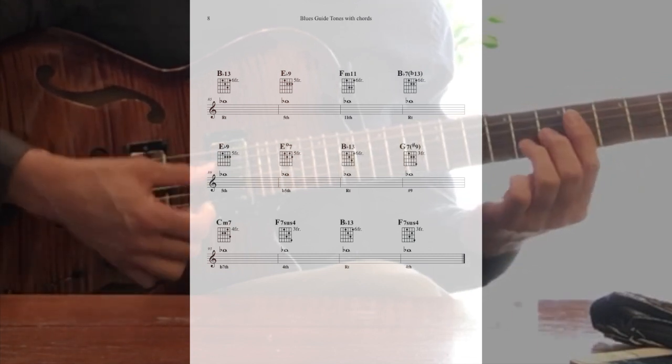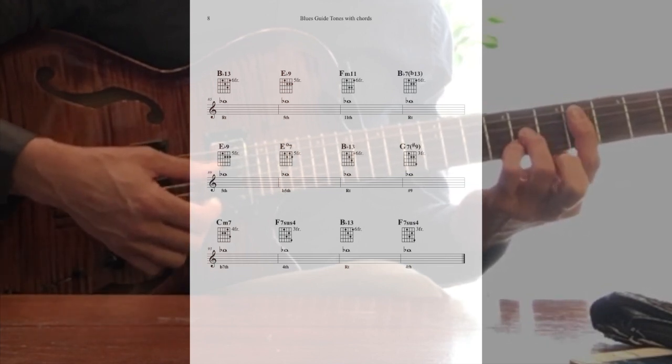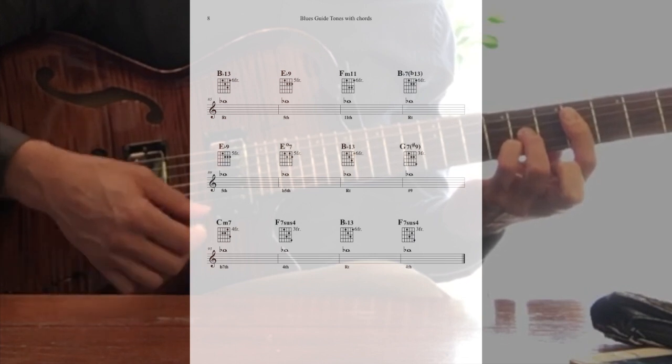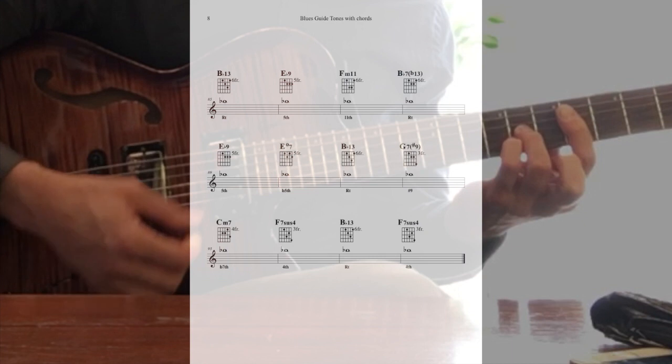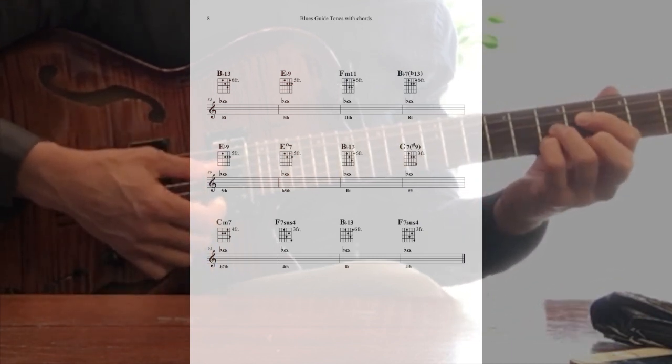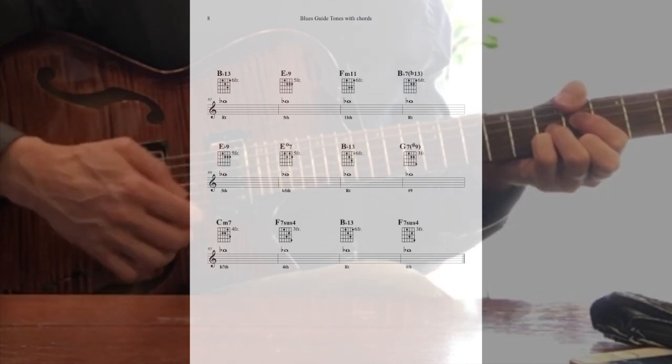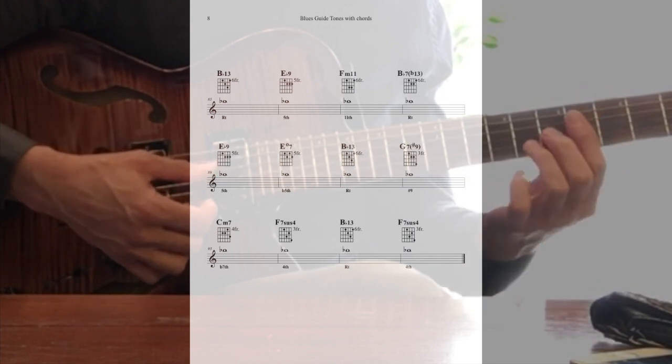I'm going to precede the one chord then with its related two chord, the F-minor 11, as if I'm playing a 2-5 in E-flat, or a 2-5 of the four chord. So I play an F-minor 11 with the ninth and the 11th, and then the B-flat seven flat 13. Again, no bass notes, no roots. We'll let the bass player take care of that.